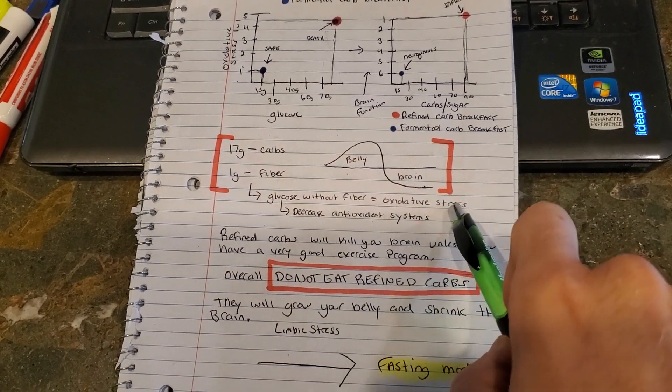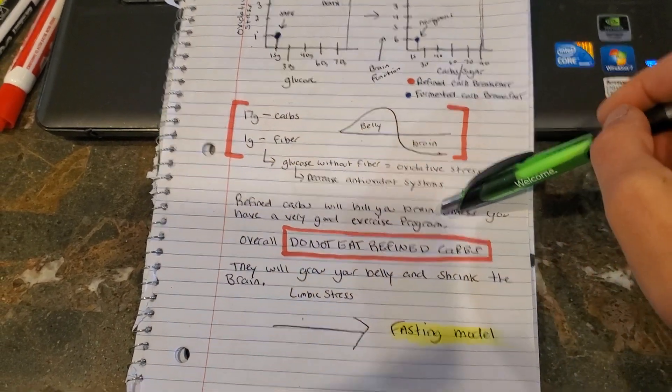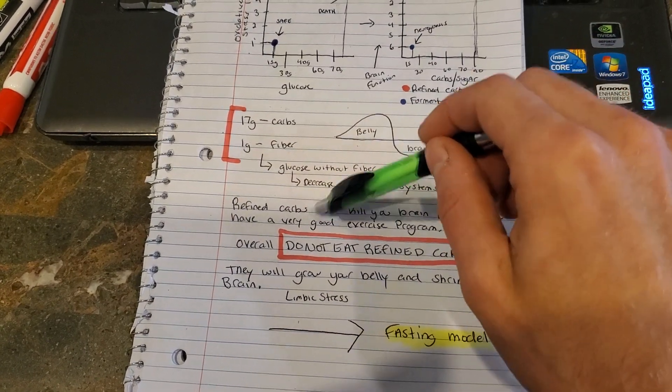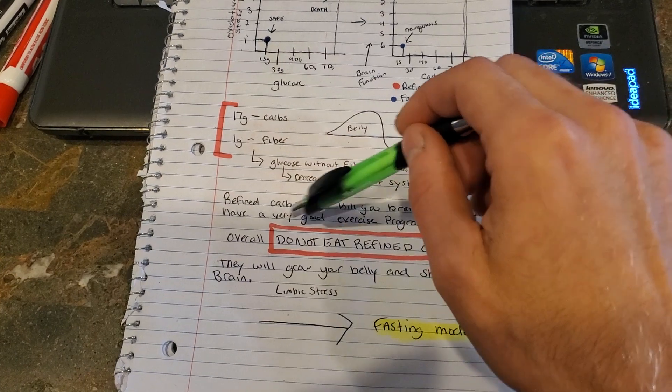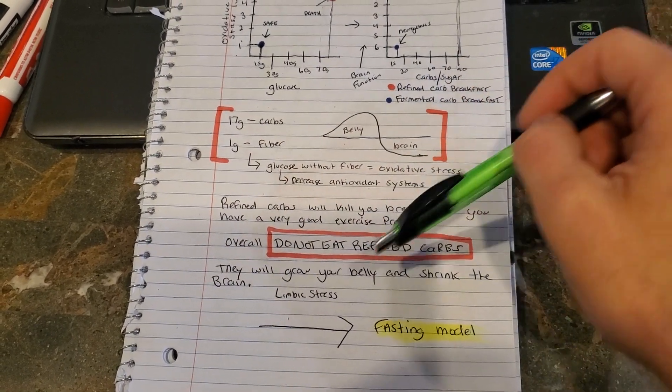So glucose without fiber is going to cause oxidative stress. It's going to decrease your antioxidant systems in your body. So overall, do not eat refined carbohydrates unless you have a very good exercise program because you will gain weight. You will not be able to deplete those quick enough in a day and your body will never reach its fat burning state.